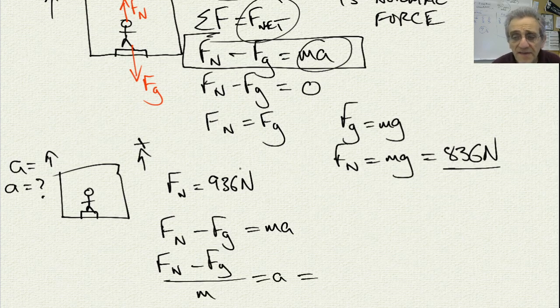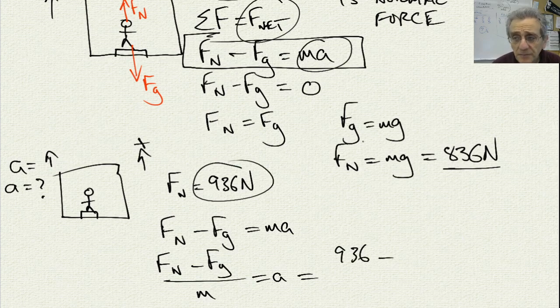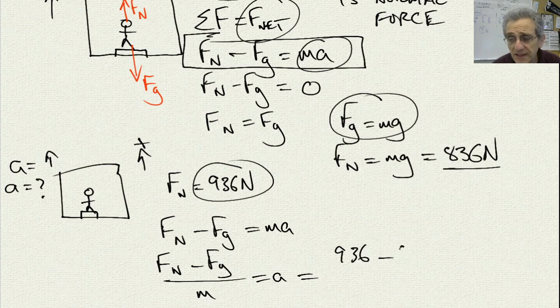Well, I know that Fn, that's given, that's 936, minus my force of gravity, which is equal to 836, which was my original when it wasn't moving, divided by the mass. Now, what's the mass?